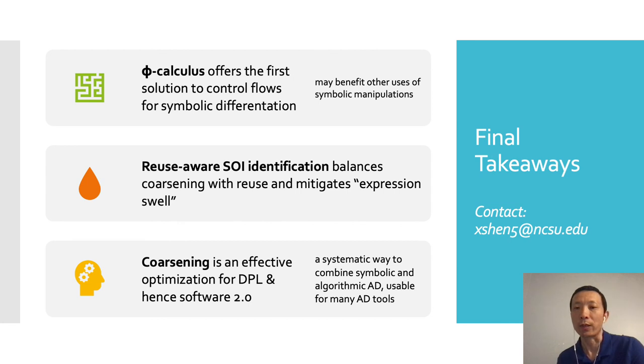Finally, Coarsening has proved as an effective optimization for differentiable programming, and hence Software 2.0. It offers a systematic way to combine symbolic differentiation and algorithmic differentiation. It is useful for many existing AD tools. Thanks for your attention. I am happy to answer any questions.